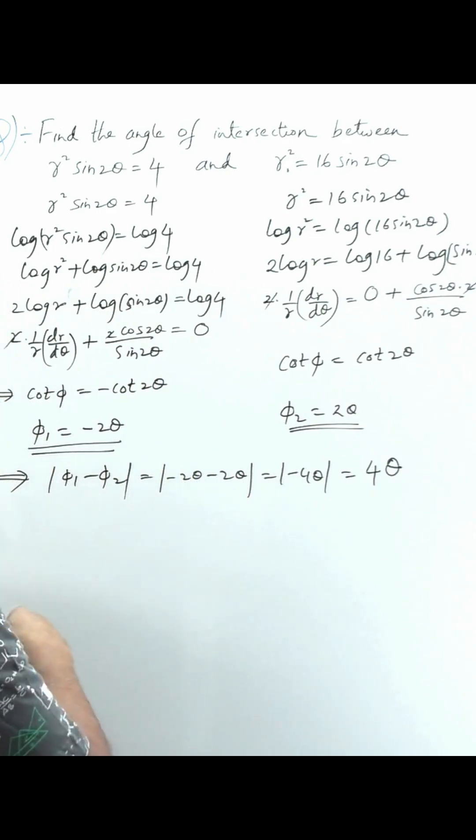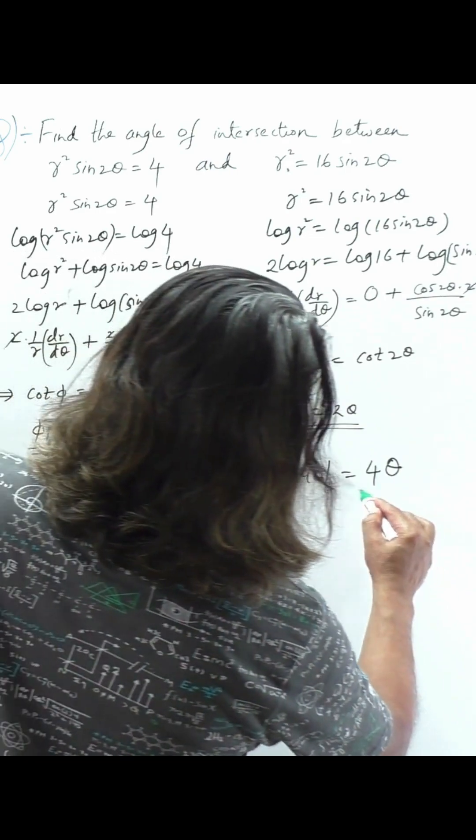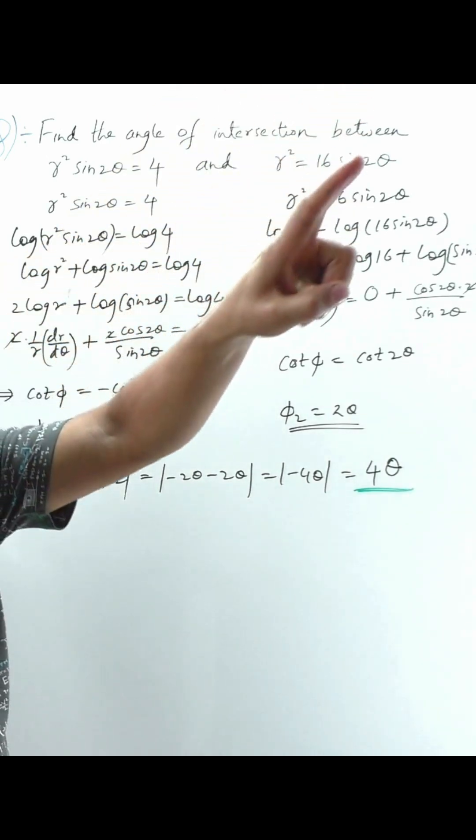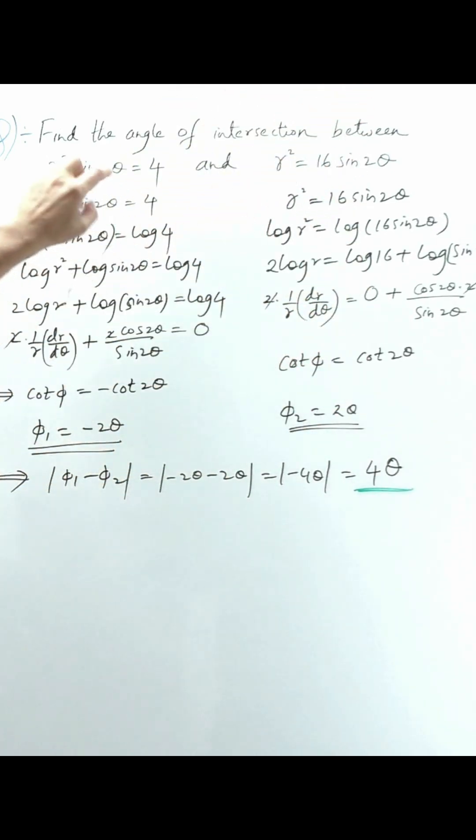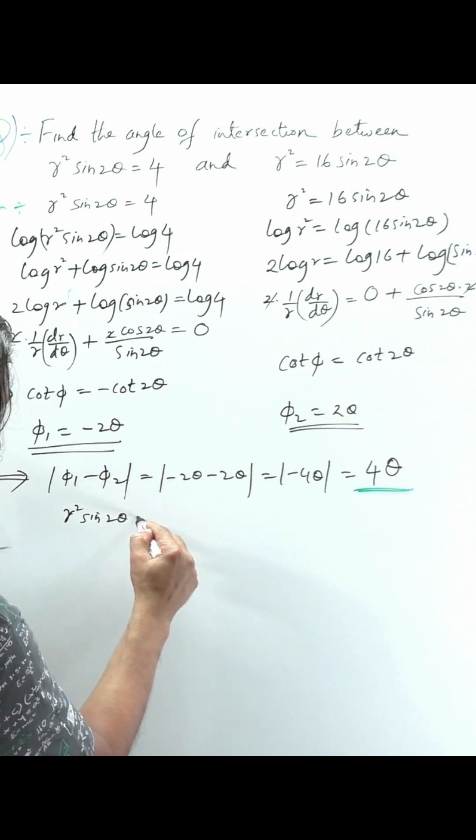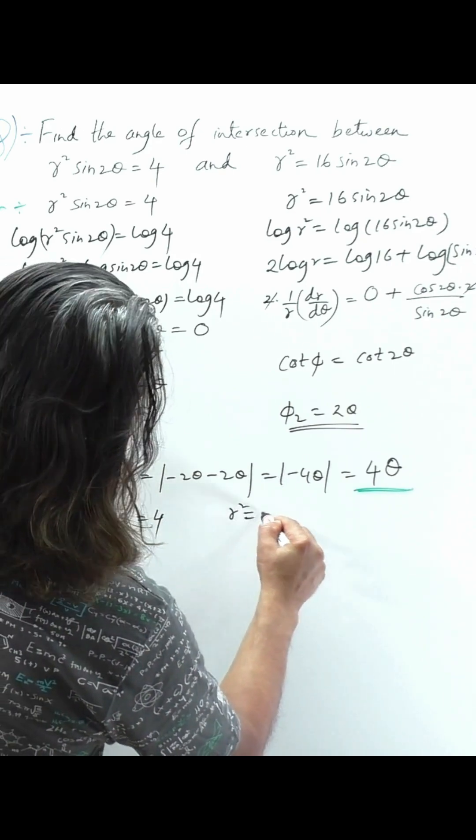So the angle of intersection is 4θ. But there is still a need to find the value of angle θ. From the question, r² sin 2θ is equal to 4 and r² is equal to 16 sin 2θ.